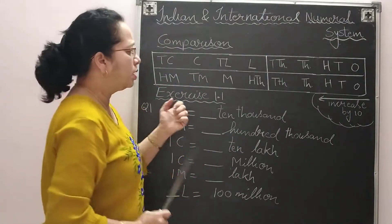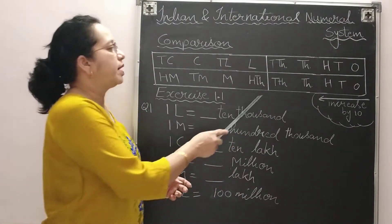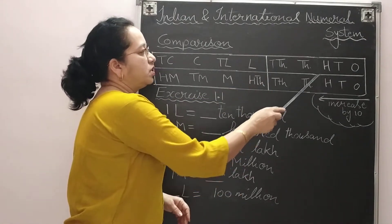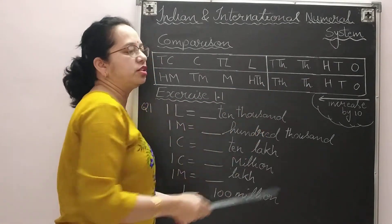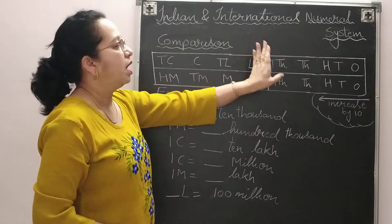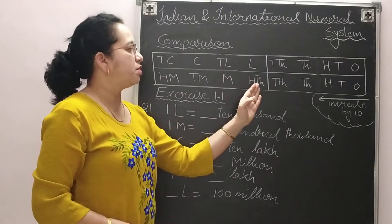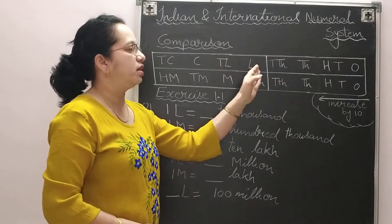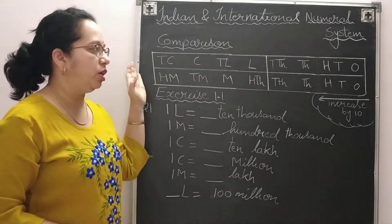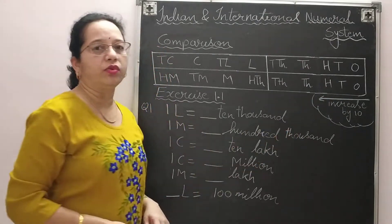I have drawn a line on the chart to show where both systems are the same. Both the Indian number system and the international number system are identical up to ten thousands. After ten thousands, the international system has hundred thousands while the Indian system has lakh.